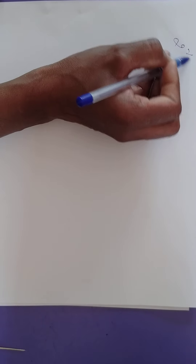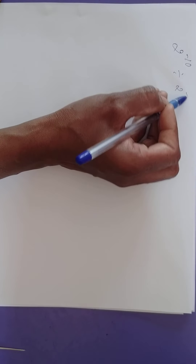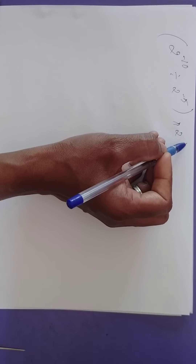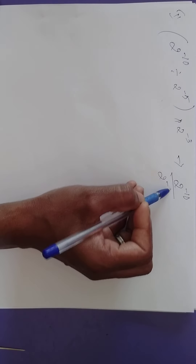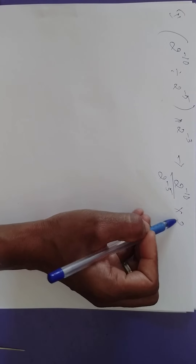Next, simplify and express with positive exponents. You have to simplify the given exponential form and write it in simple form with a positive exponent. One example: 2 to the power of minus 10, divided by 2 to the power of minus 5, into 2 to the power of minus 3.